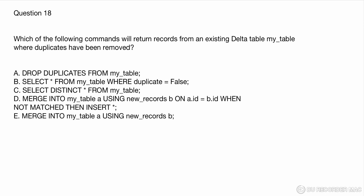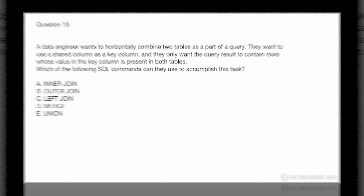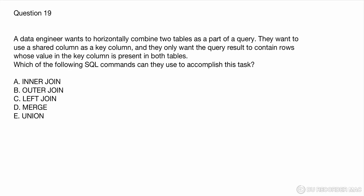Question 18: Which command returns records from an existing delta table with duplicates removed? Option A uses a non-existent 'drop duplicates' command — incorrect. Option B queries WHERE duplicate = false, which references a non-existent column — incorrect. Option C: SELECT DISTINCT * FROM my_table — this always returns distinct records, so this is correct. Options D and E use MERGE INTO, which doesn't return records. Option C, SELECT DISTINCT, is the right answer.